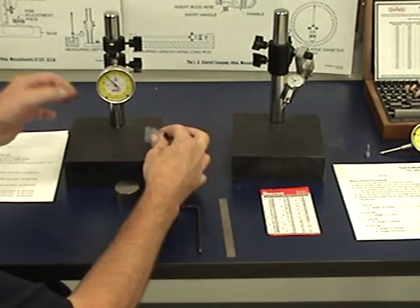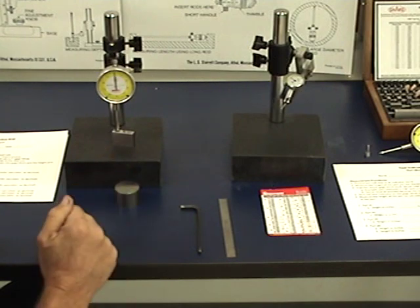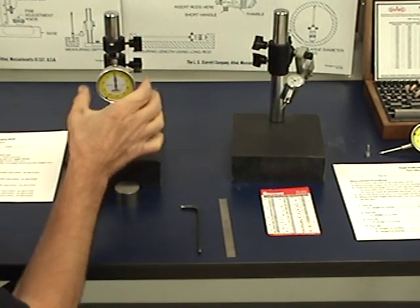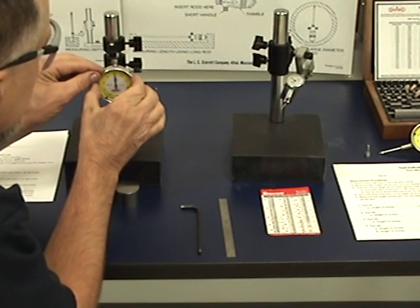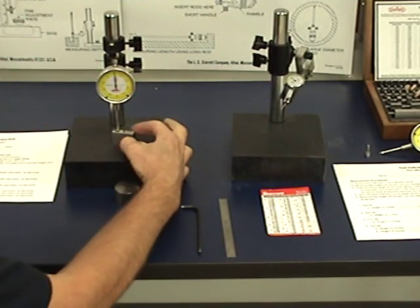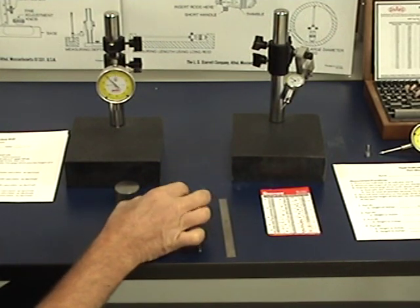So I'm going to use a one inch gauge block, slide it under my indicator, zero it out. So my indicator is at zero right now, I can turn the dial, I can set it at zero. And then I'm going to pull it off. So right there, when the indicator is on zero, it's one inch.